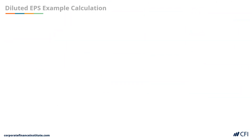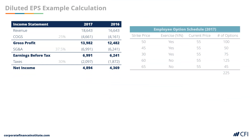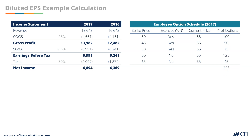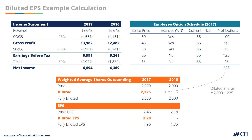Let's take a look at an example of how to calculate diluted earnings per share using an income statement and the option schedule we just looked at. The first number we need to consider is the net income in 2017, which is 4,894. Next, we need to take the number of shares created from the in-the-money options to reach our number for diluted shares of 2,225. There are no preferred dividends in this example, so we can divide the net income by the diluted weighted average shares outstanding to get a diluted earnings per share of 2.2.